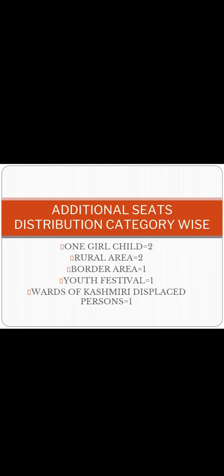Now, for the additional seats distribution category-wise: for single girl child, 2 seats are available; for rural area, 2 seats; for water area, 1 seat; for youth festival, 1 seat; and for wards of Kashmiri displaced persons — Kashmiri migrants — 1 seat.